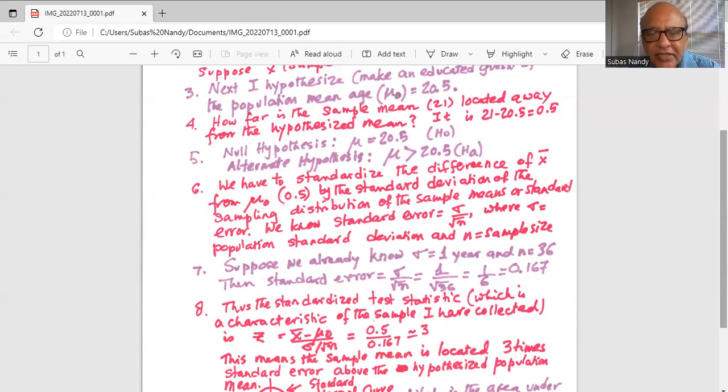Thus the standardized test statistic which is a characteristic of the sample I have collected is given as standard normal variable z. The difference between the sample mean and the hypothesized population mean which I have already calculated as 0.5 divided by standard error. So 0.5 divided by 0.167 is 3.